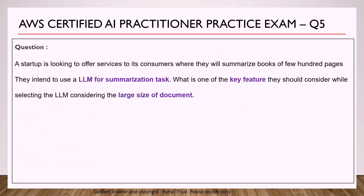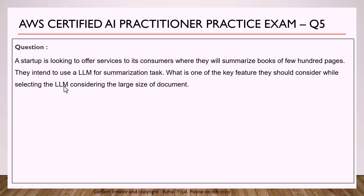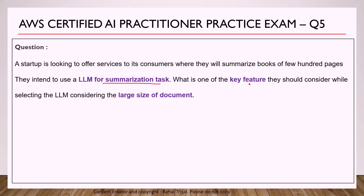The fifth question: a startup wants to offer a service to summarize books of a few hundred pages using an LLM. What is one key feature they should consider while selecting the large language model, given the large size of the document? The keywords are: LLM for summarization tasks, and selecting a key feature considering the large document size.